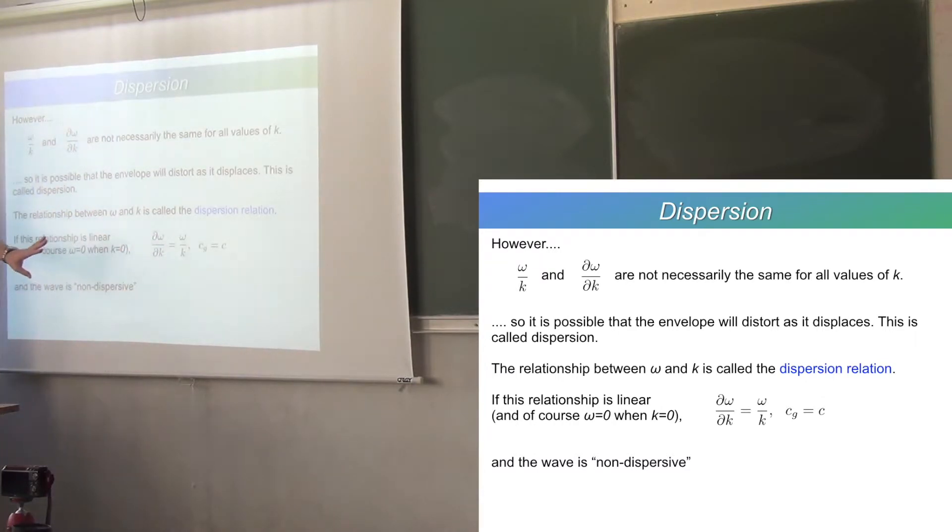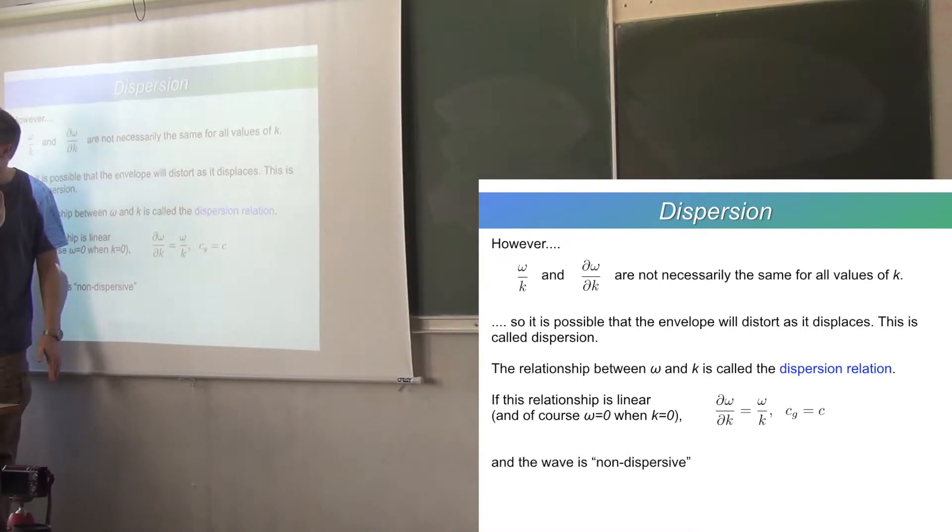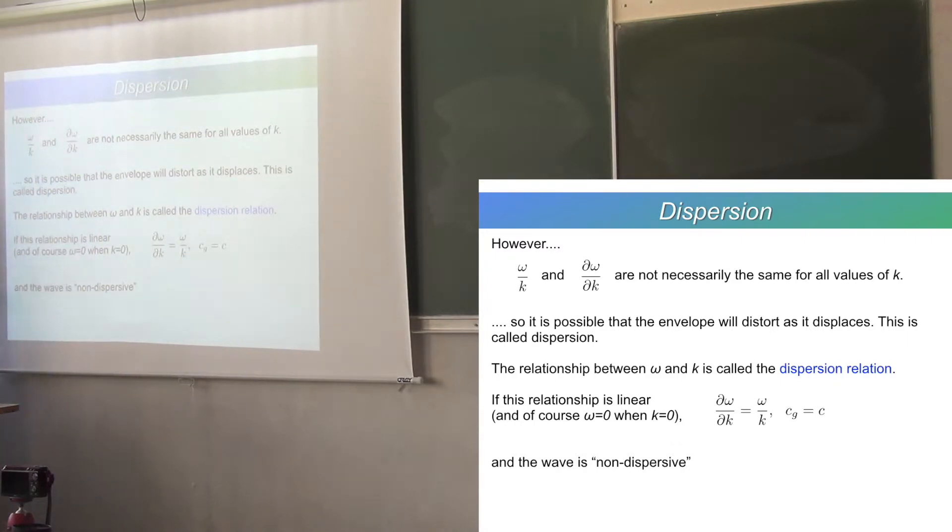Now, that system there is called non-dispersive. So, if you have a dispersion relation which is linear, then that can be described as non-dispersive. Linear and passes through the origin. Non-dispersive, all wavelengths go the same speed, all frequencies go the same speed, and the phase speed is the same as the group speed. That's your non-dispersive wave.